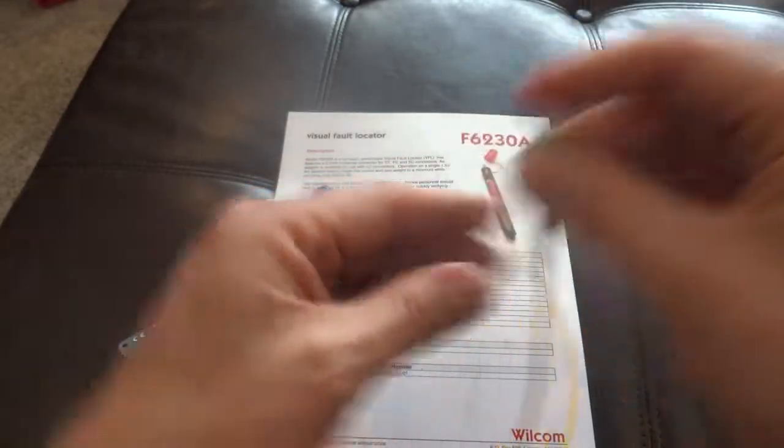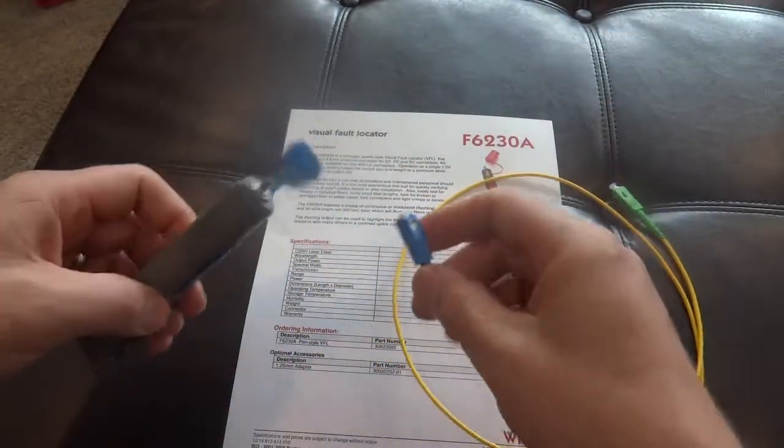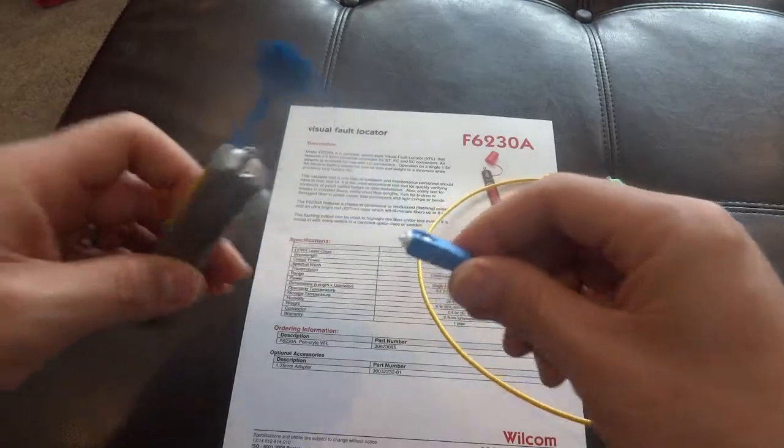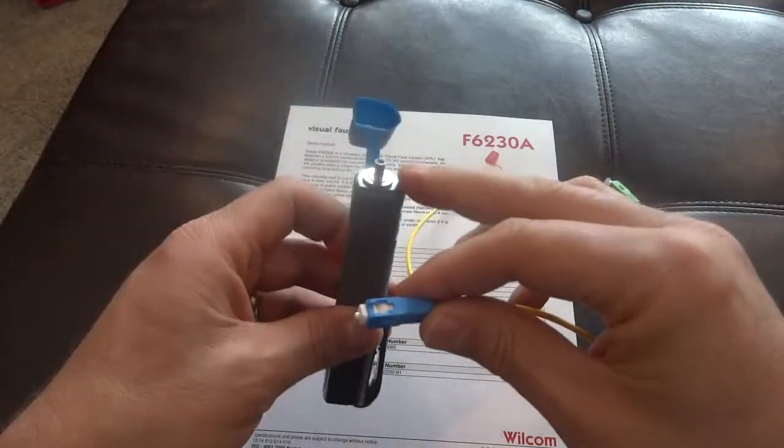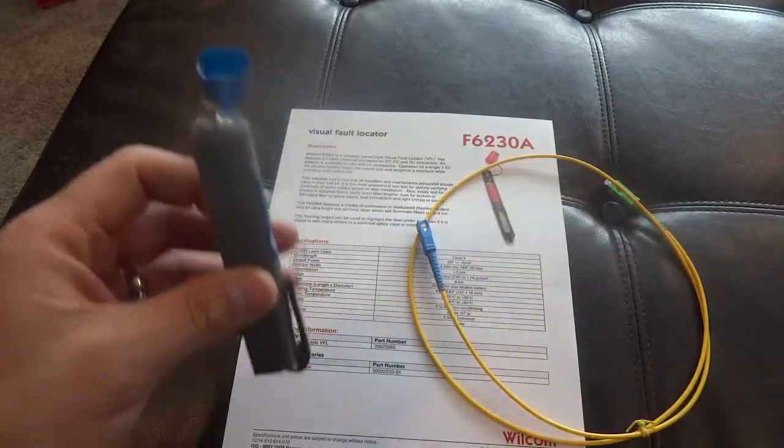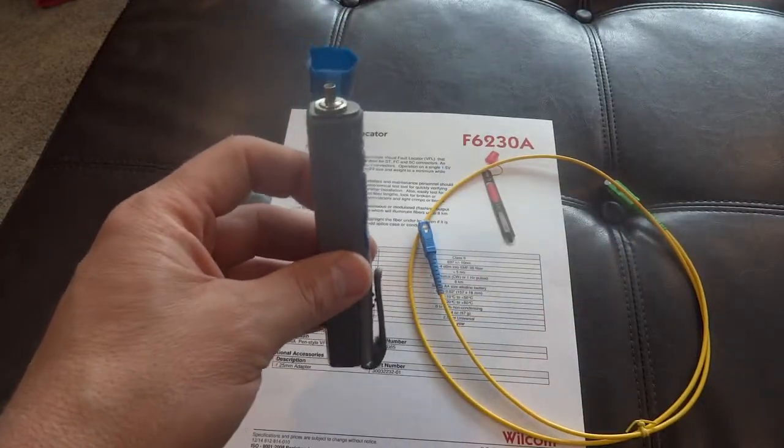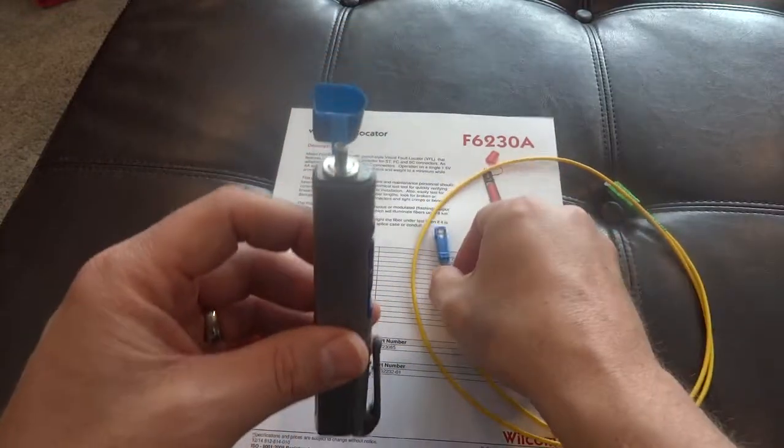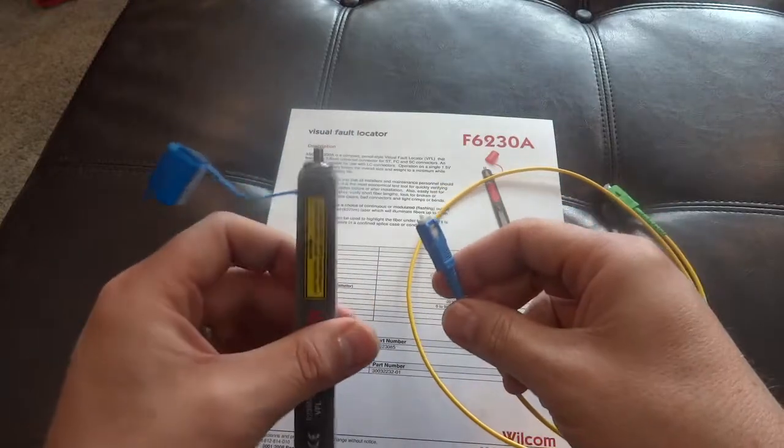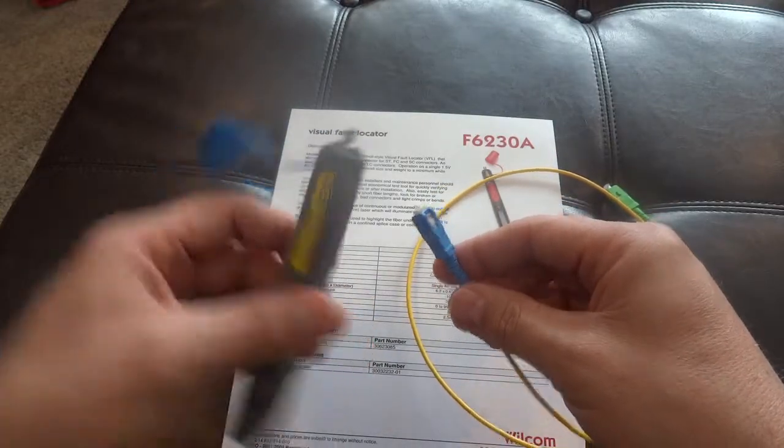We're going to use this visual fault locator. First, you want to make sure you clean your stuff. We've got different devices here, different items that can clean them. Make sure you've got clean cables when putting them into this, so they don't dirty up the test equipment.